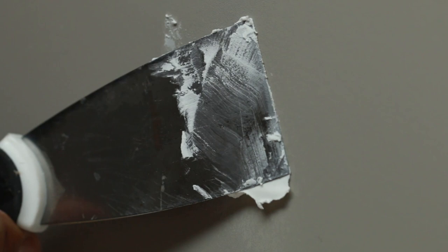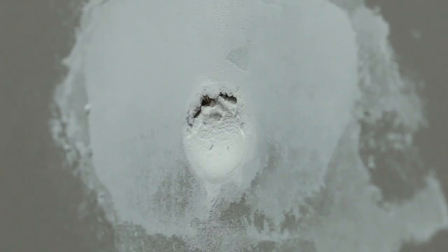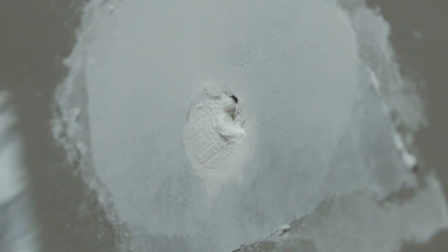For larger holes, apply the first layer of spackle and let it completely dry. You'll notice for larger holes, the spackle will slightly sink in as it dries. You'll need to apply another light layer of spackle to bring it to level to the rest of your wall. Once the spackle is dry, sand it down with some sandpaper, and apply a new layer of paint and you're all set.